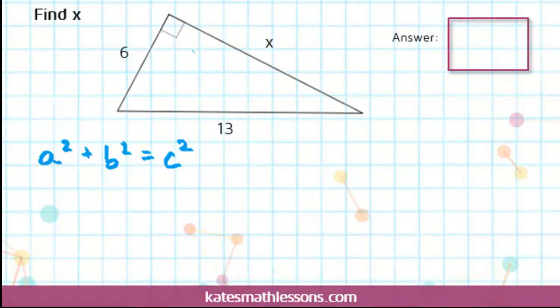We have a right angle here, so that means we can use the Pythagorean Theorem. A and B must be the legs of the right triangle, and C must be the hypotenuse of the right triangle. The most important thing to do when using the Pythagorean Theorem is to make sure you label A, B, and C correctly.